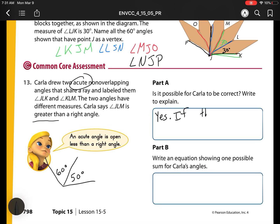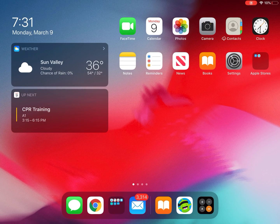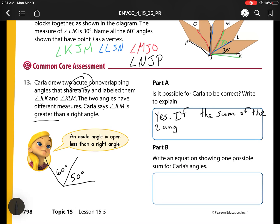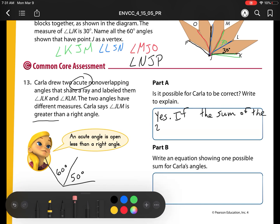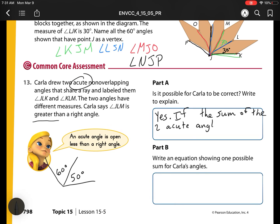And how am I going to state this? If the sum of the two acute angles is greater than 90 degrees, she is correct. And let me just give that example, and my problem is 60 degrees plus 50 degrees equals 110 degrees. And part B is my next part. Write an equation to show you one possible sum. So here we have the same thing we just put up there is 60 degrees plus 50 degrees equals 110 degrees.